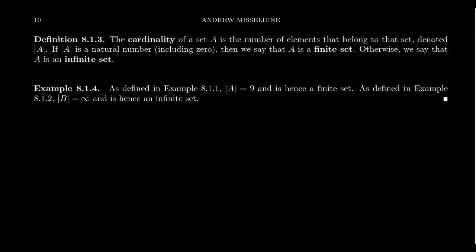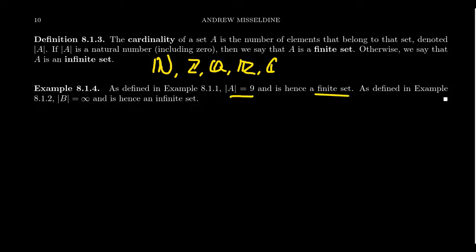Many of the sets we've considered are already infinite: the natural numbers, the integers, the rational numbers, the real numbers, the complex numbers — these are all examples of infinite sets. From the two sets we were considering, set A — the integers whose absolute value is less than or equal to four — had nine elements, so it's a finite set. On the other hand, set B — the real numbers whose absolute value is less than or equal to four — is actually an infinite set. We couldn't list every single element; there are too many.